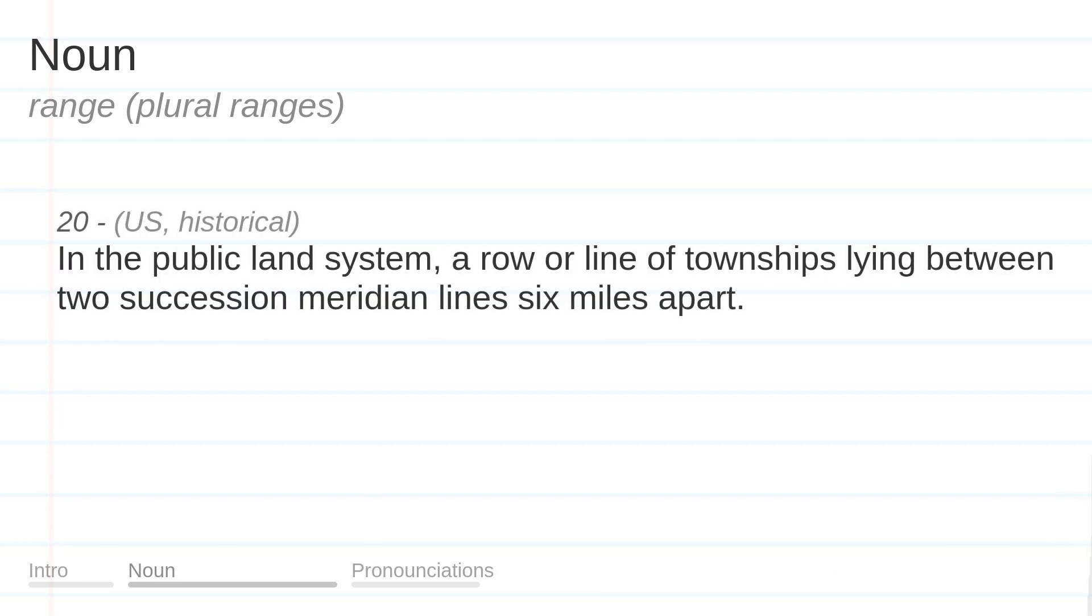In the public land system, a row or line of townships lying between two succession meridian lines six miles apart.